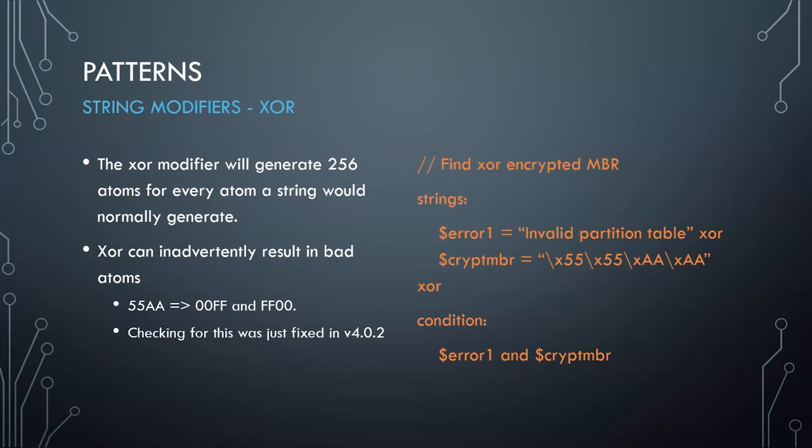The problem is that the MBR signature can turn into 0x00FF and 0xFF00, both of which will match far more than the underlying pattern. This was fixed in YARA 4.0.2 — they now actually check to make sure you're not accidentally getting bad atoms out of an xor modifier.